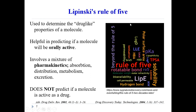Lipinski's Rule of Five is a general rule that's used to determine the drug-like properties of a molecule. This is helpful in predicting if a molecule is orally active. What that means is it doesn't tell any information about other forms of application — injections or any other form. It only talks about oral application drugs.